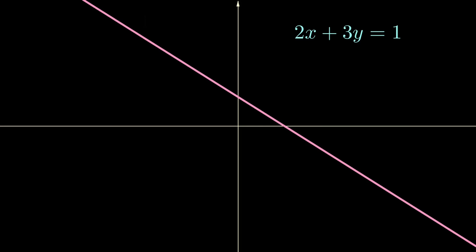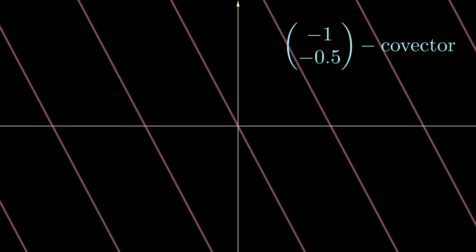We label this line to be 1, because that's all the points that will be measured to be 1. We only draw line graphs for integer values of c, so we have parallel lines at regular intervals. Different covectors will have different sets of parallel lines with different directions and densities. But now the question is: given a particular set of parallel lines, can we quickly spot which covector this is? In this case it is the (−1, −0.5) covector.